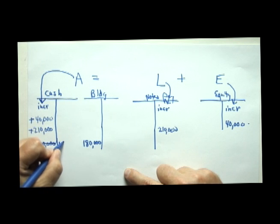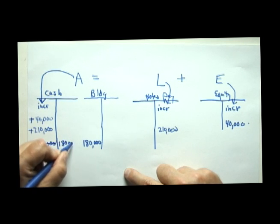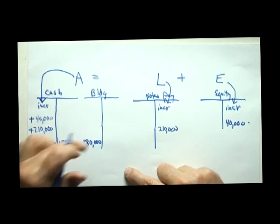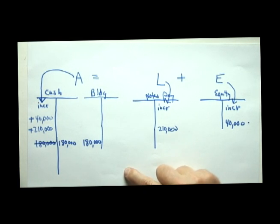Cash is an asset, it went down. We'll put that on the right, the building on the left.